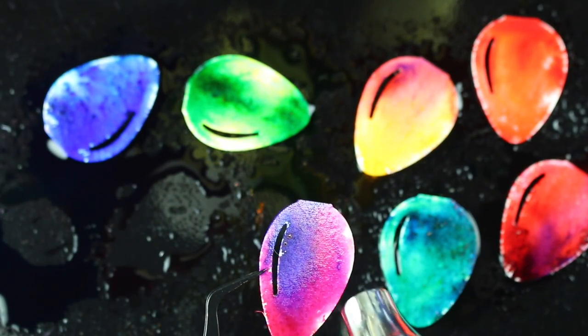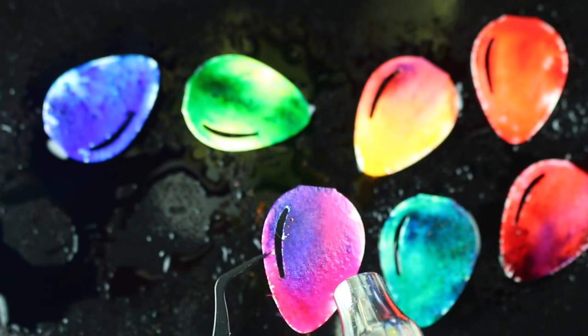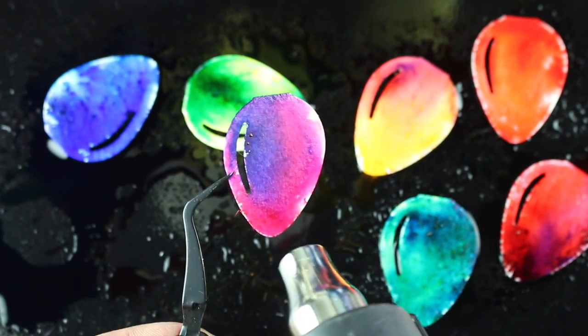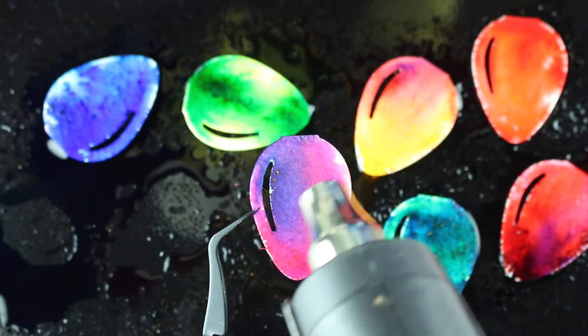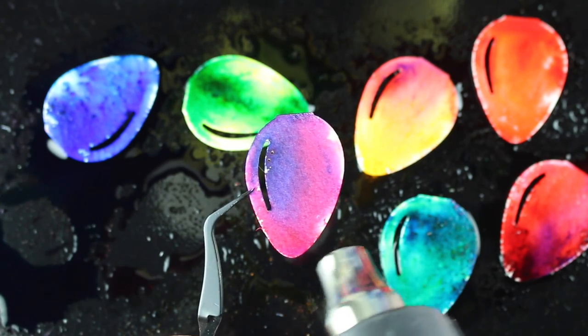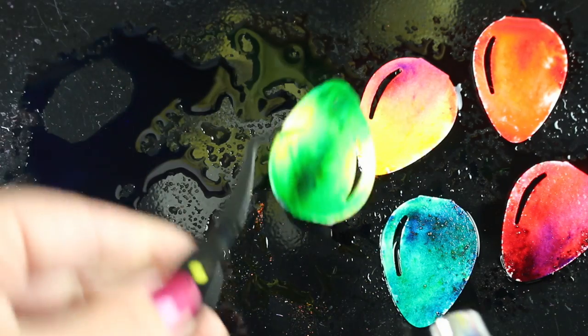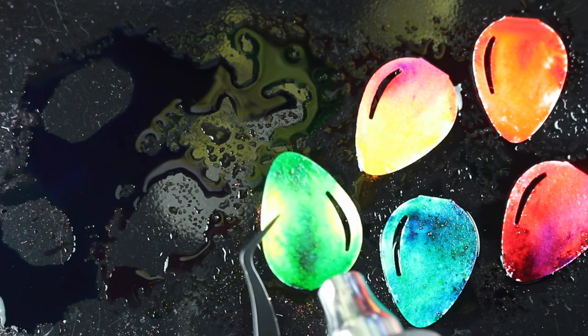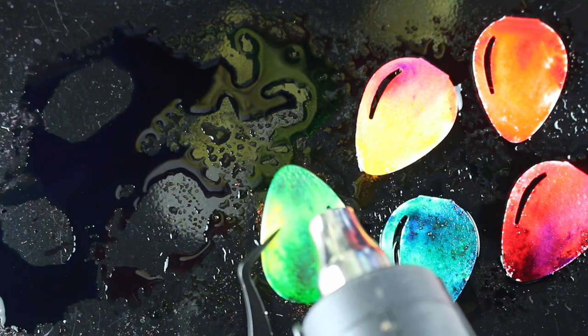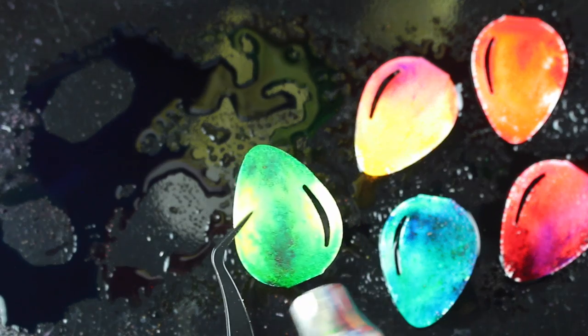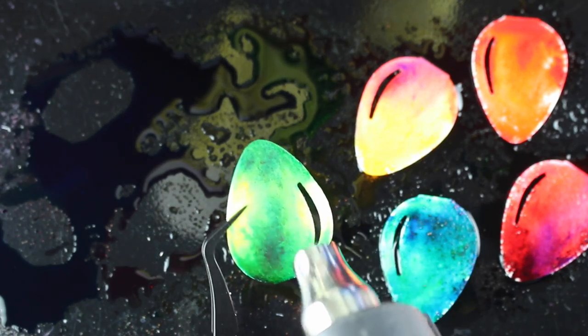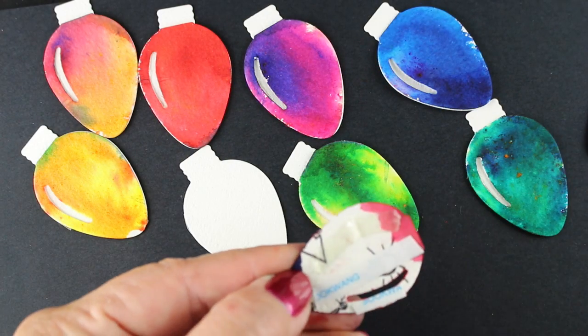I'm using some tweezers to pick these up and what I actually had done as well just to make sure that they set up off the surface so I could pick them back up, I do have a little piece of dimensional adhesive behind them so that they're a little bit off the surface. It's going to make them easier to lift. And I'll just heat set each one because I want to keep some of that granulation and if you let them sit for too long then sometimes they'll smooth out a whole lot.